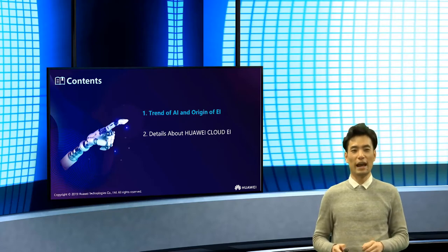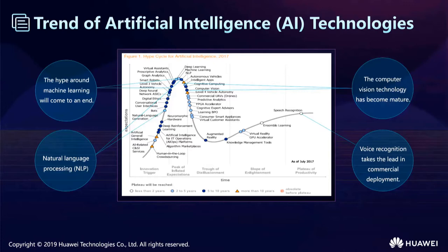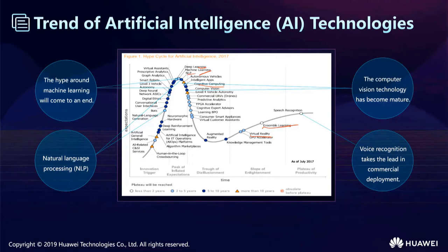Let's first see the trend of AI and origin of EI. AI technologies have become very popular, and this image shows the most common application directions of AI technologies, including their stage of development. On the right of the image, ensemble learning and virtual reality are falling and progressing very slowly. Deep learning, machine learning, NLP, and computer vision have become more mature. Voice recognition leads in commercial development.